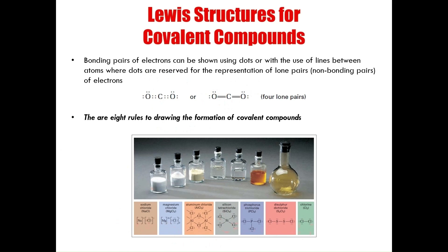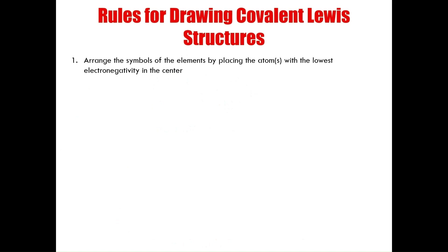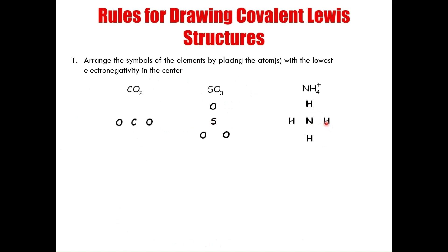There are eight specific rules for drawing covalent Lewis structures. The first rule: arrange the symbols of the elements by placing the atom or atoms of lowest electronegativity in the center of your covalent drawing. In the three examples shown, carbon, sulfur, and nitrogen are the central elements. When you have more than one central atom, remember that the lowest electronegativity atoms are the ones that go in the center of your compound.